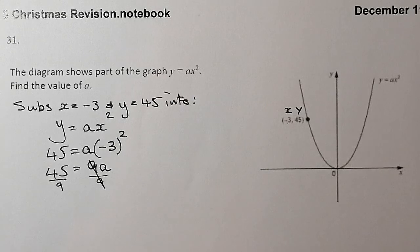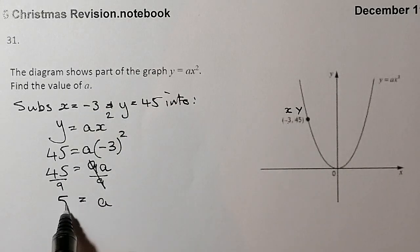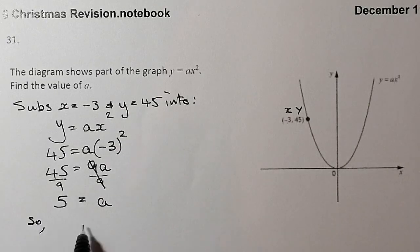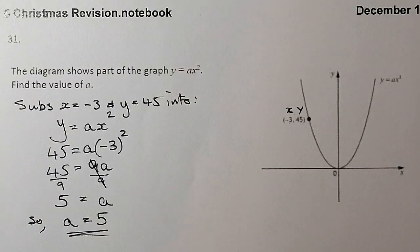I'll eliminate the 9 that's there. So I've got a is equal to 45 divided by 9 will give me 5. So a is equal to 5. So that would be the answer for this question here, quite reasonably straightforward.